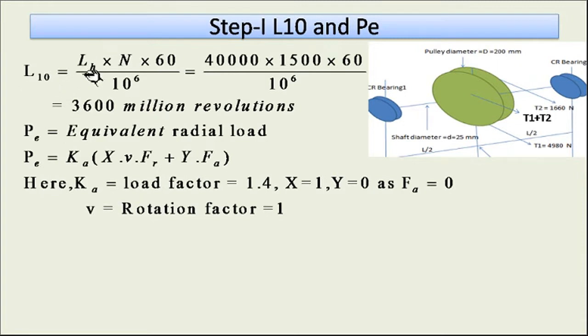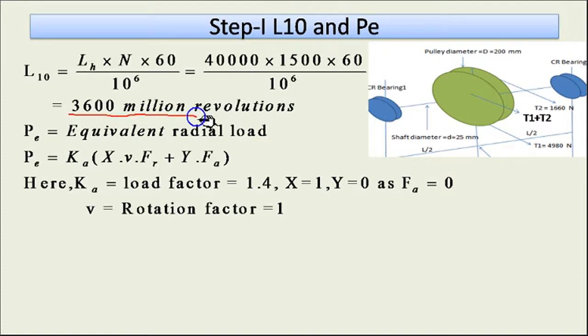Calculating L10: putting Lh = 40,000 hours, N = 1500 rpm, we get L10 = 40,000 × 1500 × 60 / 10^6 = 3600 million revolutions.